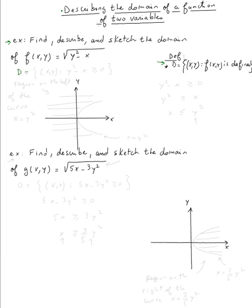In this case, the domain is the set of all (x, y) such that √(y² - x) is defined, which means whatever is under the radical has to be greater than or equal to zero. So we need y² - x ≥ 0, which means y² ≥ x, or equivalently x ≤ y².